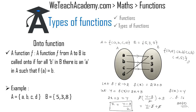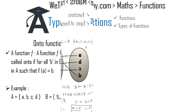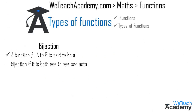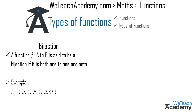Now let us move to bijection. A function from A to B is said to be a bijection if it is both one-to-one and onto. Let me explain this with an example. Here we have the ordered pairs of the sets as (x, a), (y, b), and (z, c).